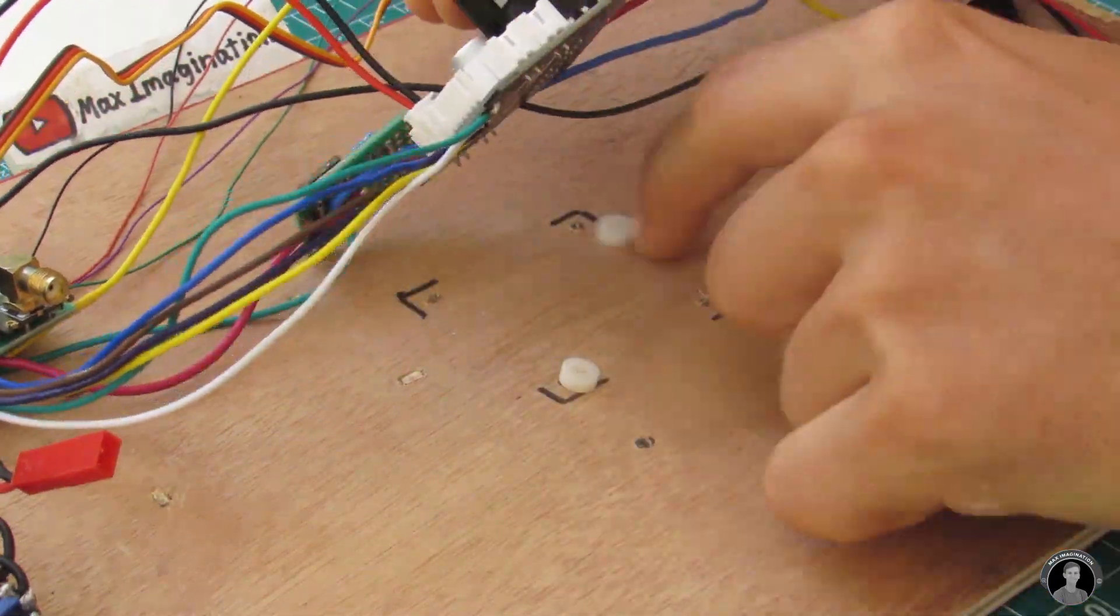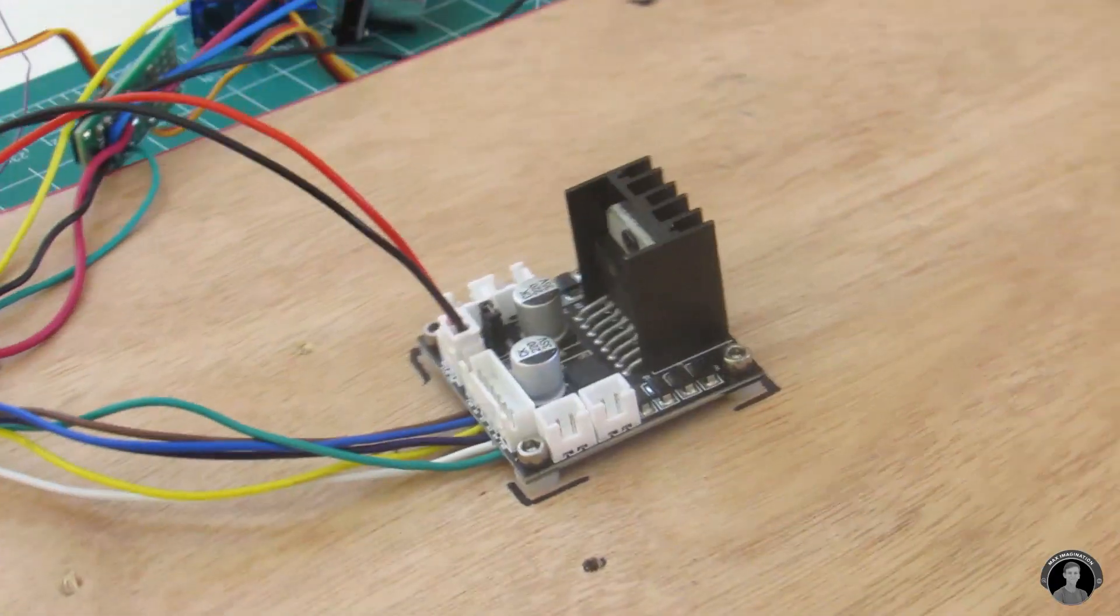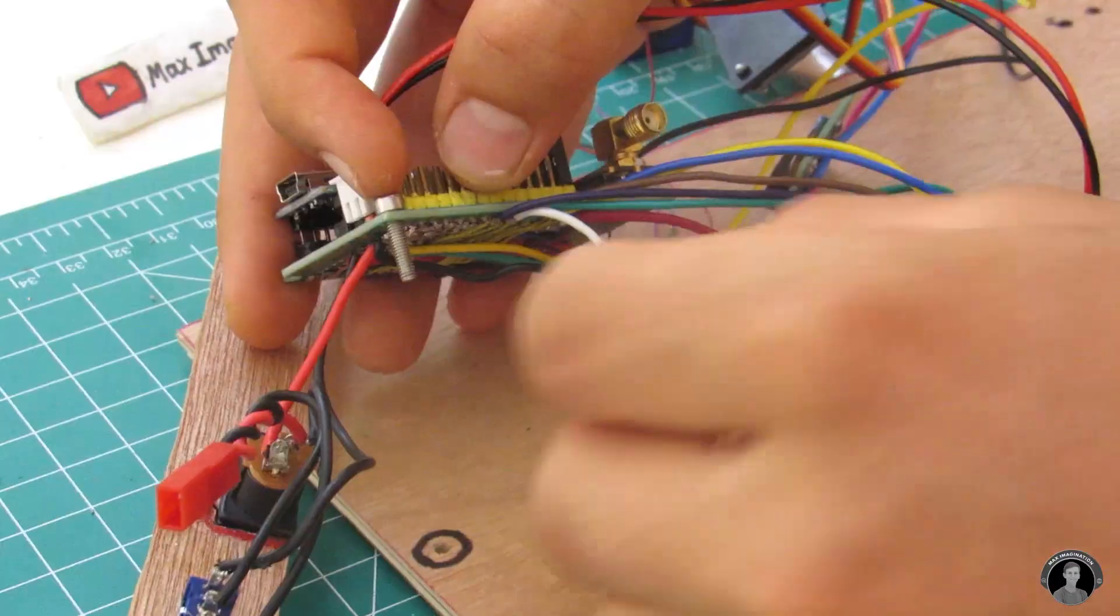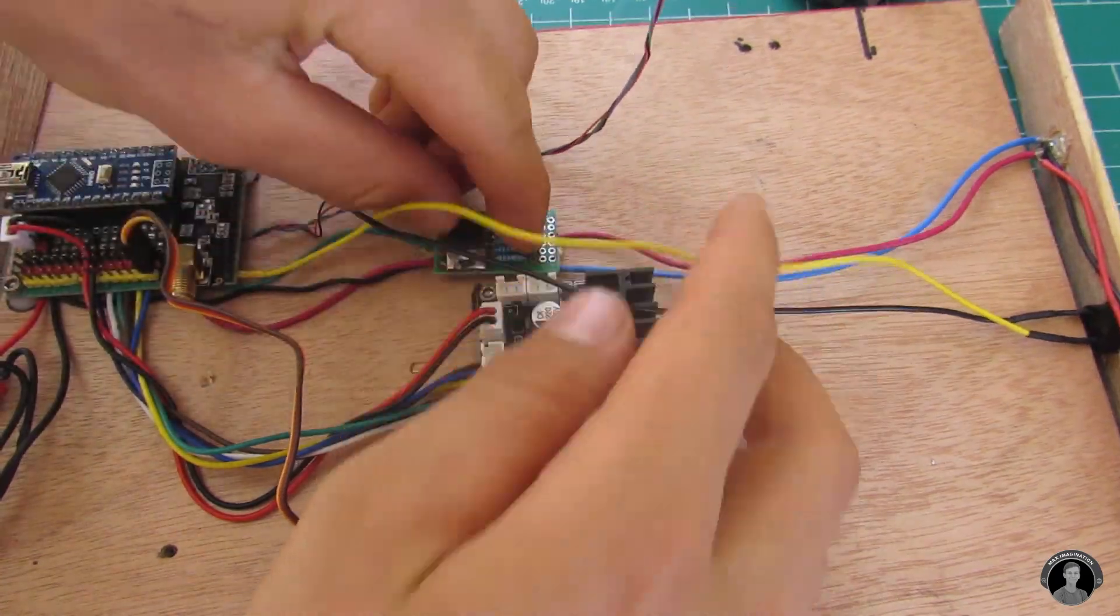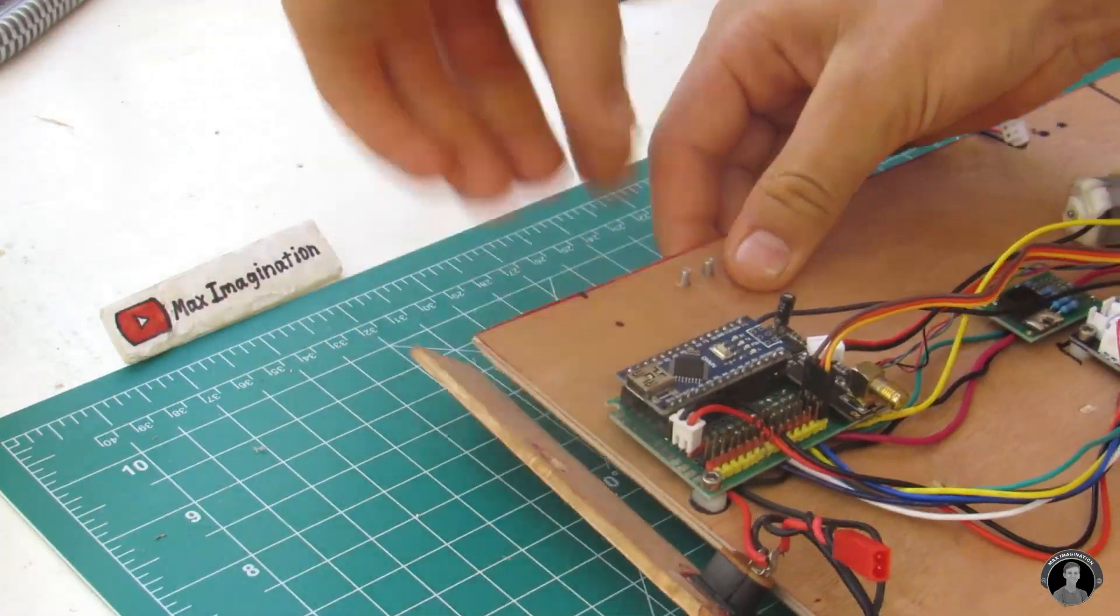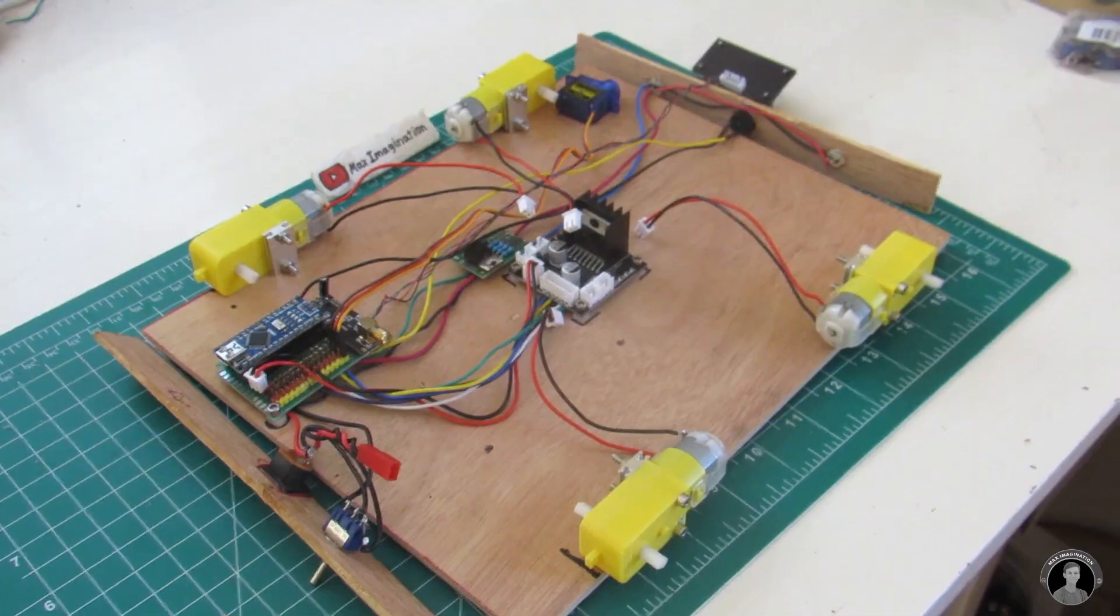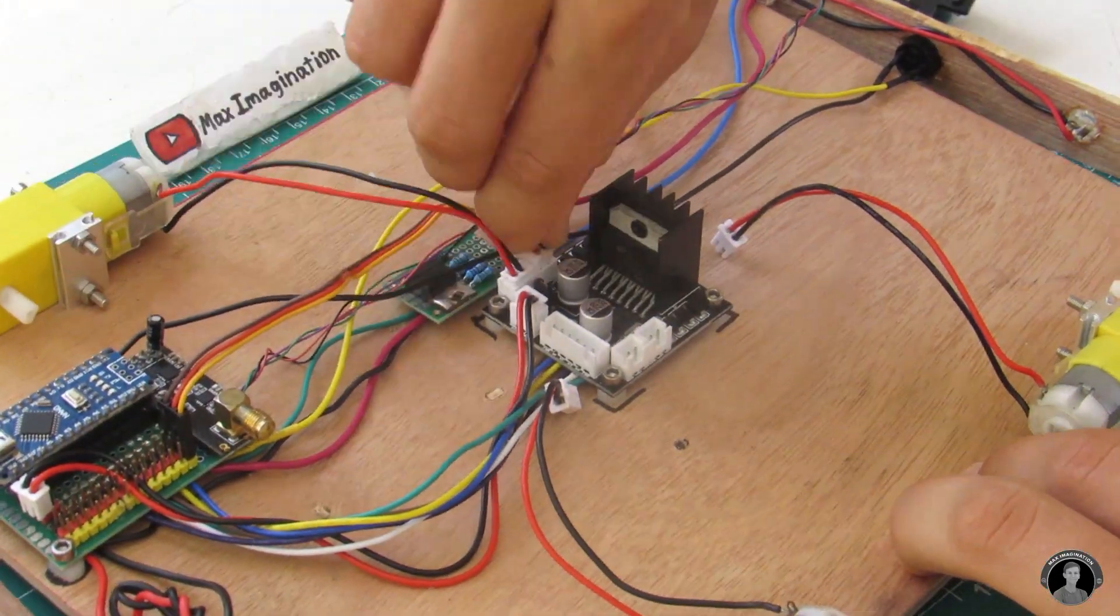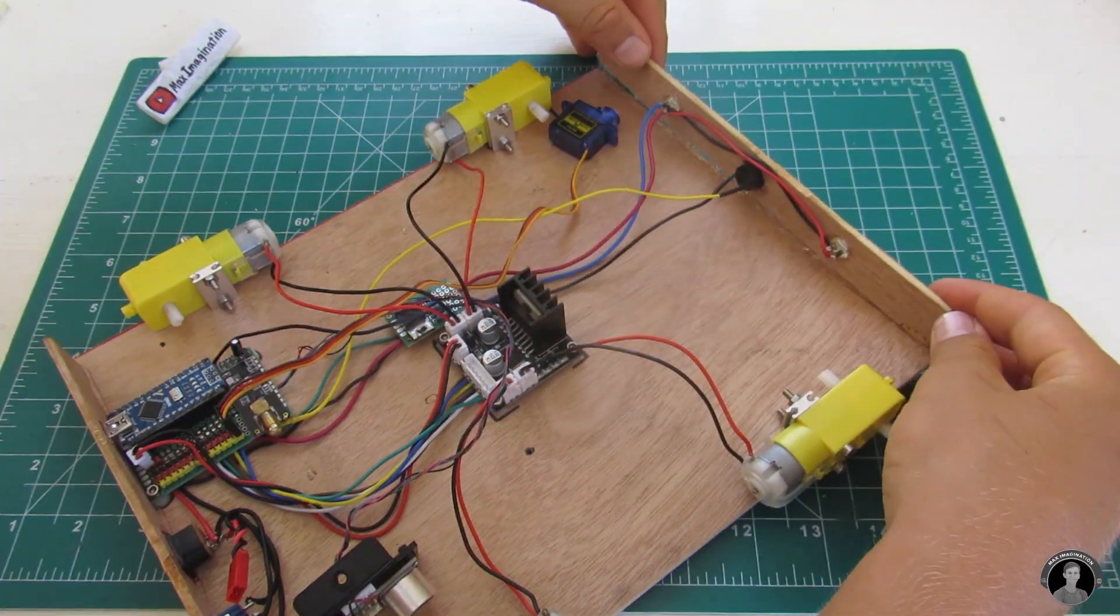Now it's time to secure everything down onto the base. Once everything's fixated to the board, let's not forget to connect up the motors to the driver. Glue the front, back, and side panels to the base of the rover.